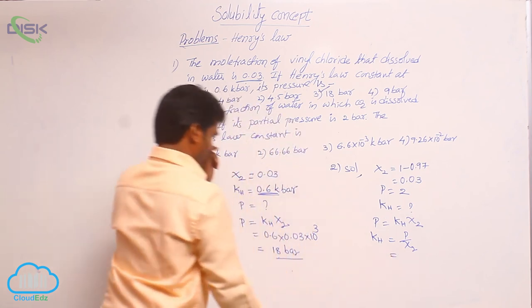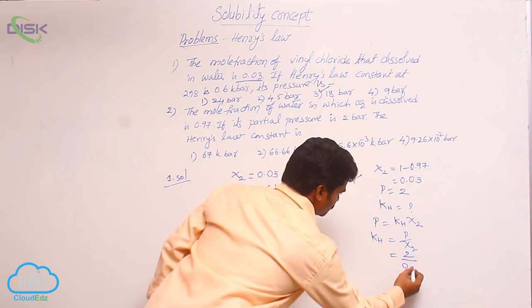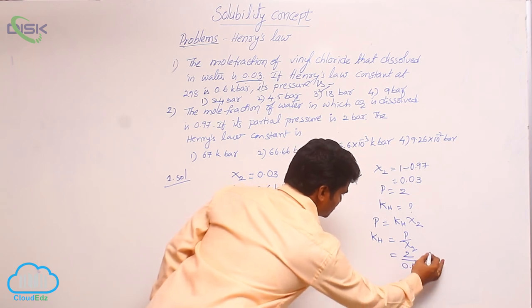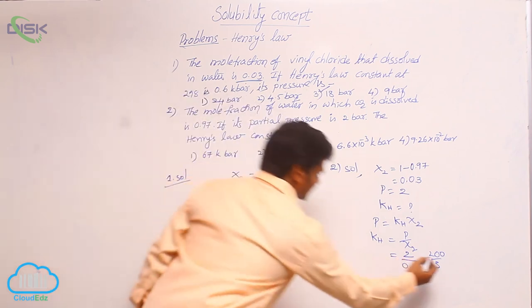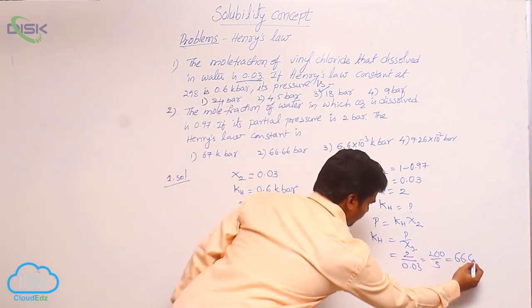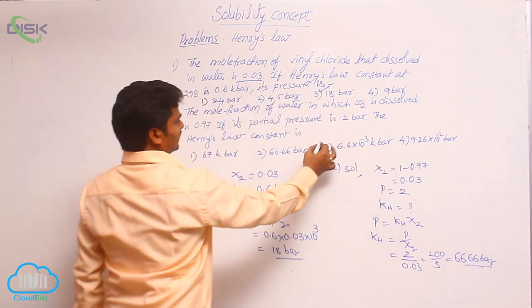So what is the value of pressure? 2 bar by 0.03. That means 200 by 3. 200 by 3 means 66.66 bar. Where is it? This is in third option.